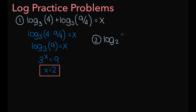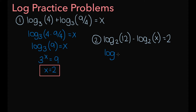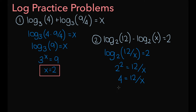For our second problem, we have the log base 2 of 12 minus the log base 2 of x equals 2. We apply the quotient rule on the left side, and this becomes the log base 2 of 12 divided by x, equal to 2. Converting to exponential form gives 2 squared equals 12 over x. Since 2 squared is 4, we have 4 equals 12 over x. Multiplying by x on both sides gives 4x equals 12, which means x equals 3.